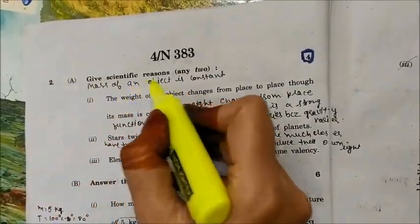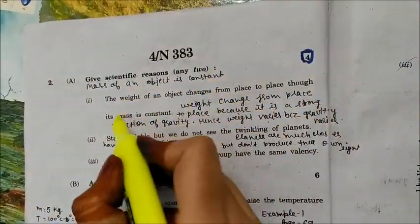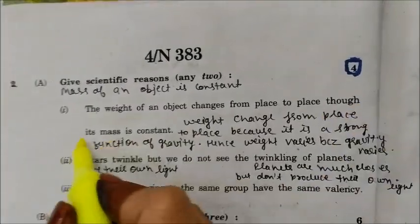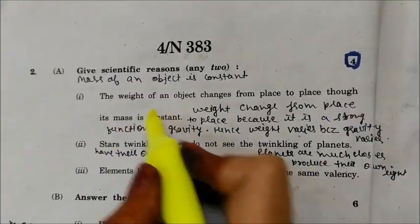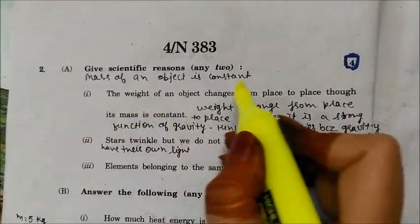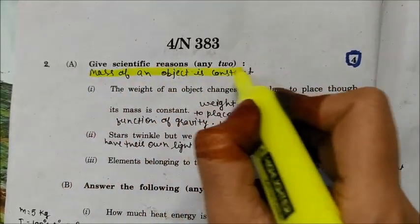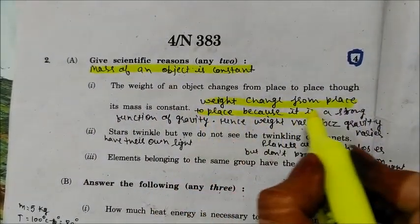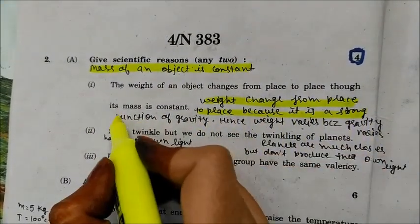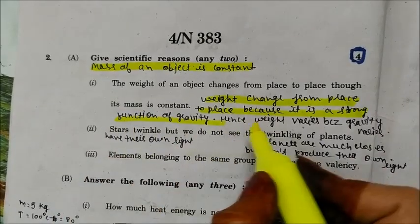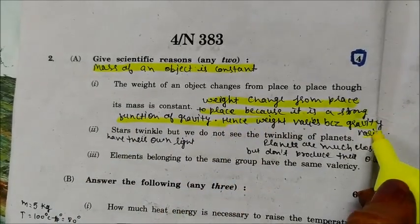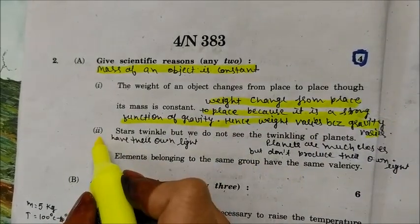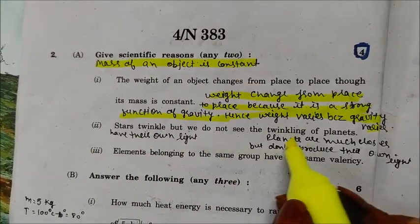Question 2A, give scientific reasons: The weight of an object changes from place to place though its mass is constant. Mass is constant, but weight changes because it is a function of gravity — weight varies because gravity varies.